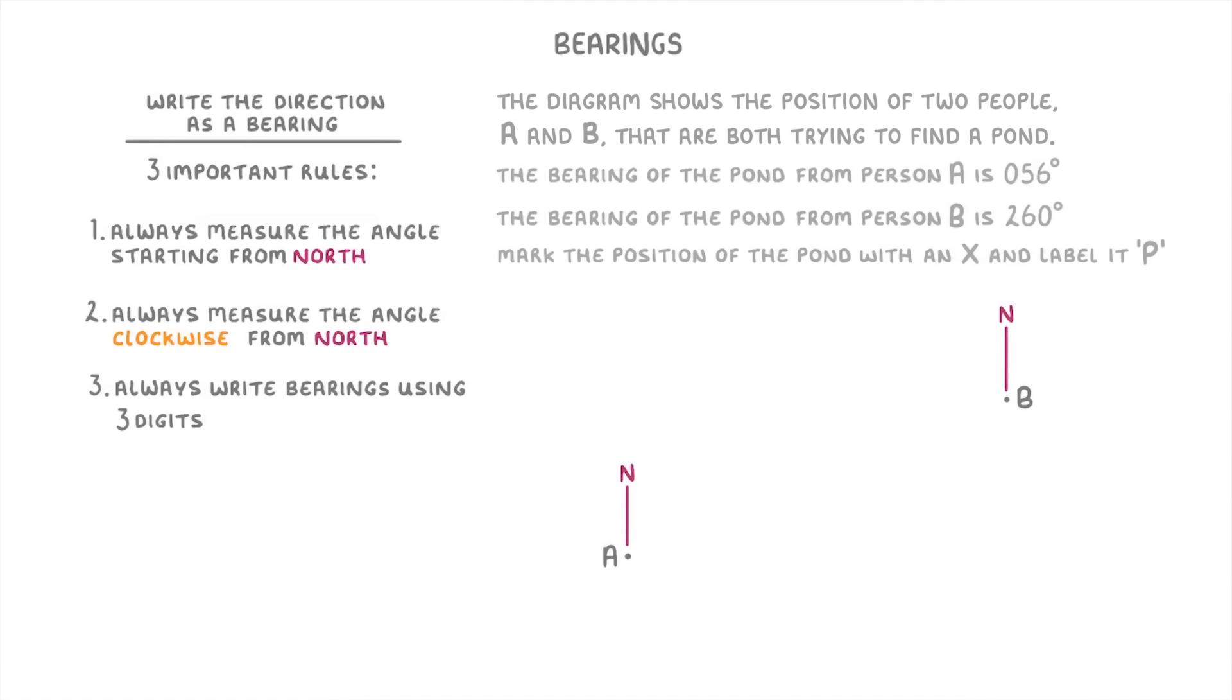Okay, so we're told in the question that the diagram below shows the positions of two people, person A and person B, and that both of them are trying to find a pond. Then we're also told that the bearing of the pond from person A is 56 degrees, and the bearing of the pond from person B is 260 degrees. And our job is to mark the position of the pond with a cross and label it P.